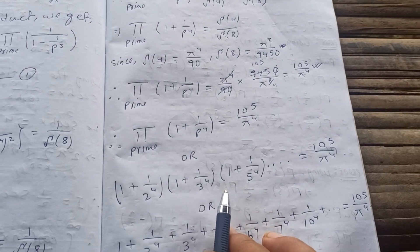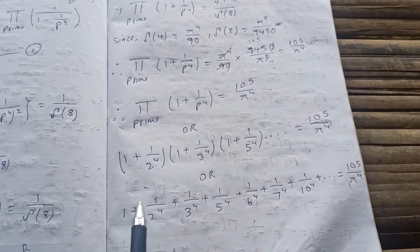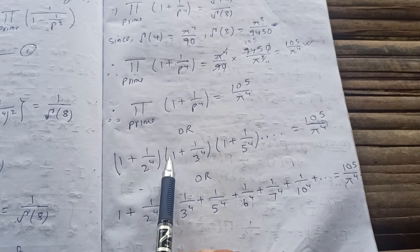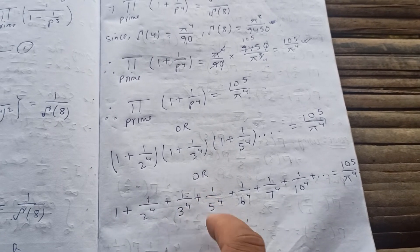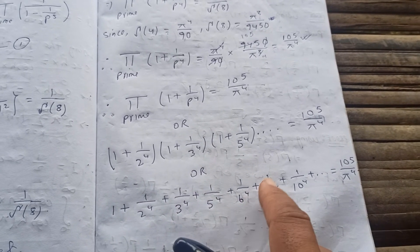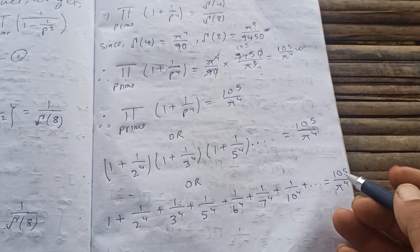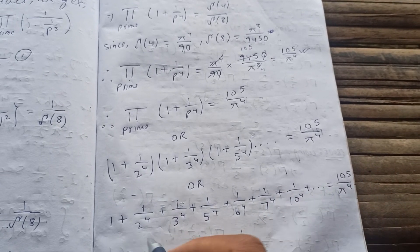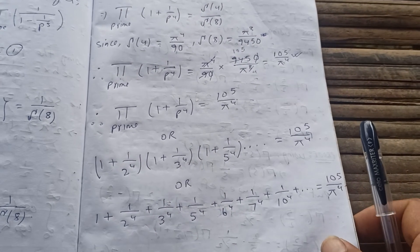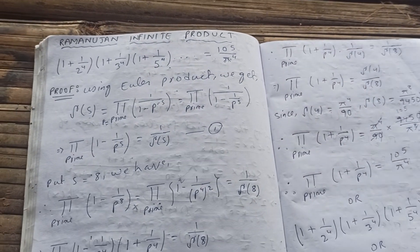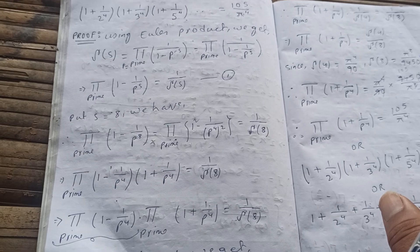You can also convert this product into a sum. If you expand and multiply it out, you get 1 + 1/2⁴ + 1/3⁴ + 1/5⁴ + 1/6⁴ + 1/7⁴ + 1/10⁴ + … equals 105/π⁴. In this way we can evaluate this Ramanujan infinite product.